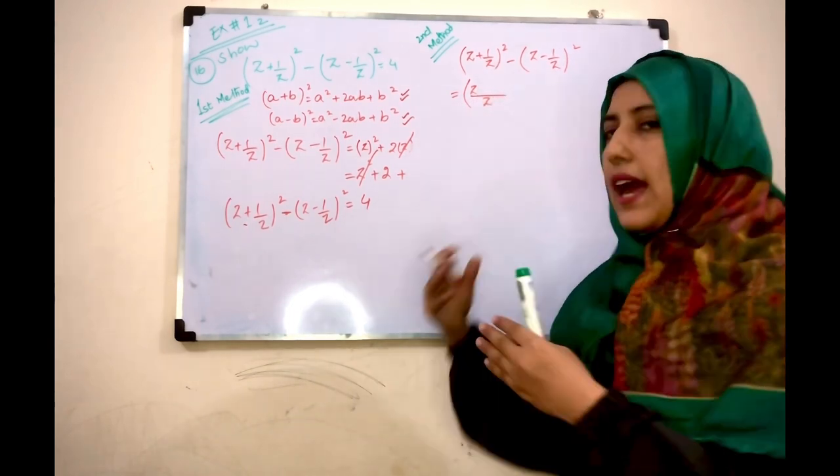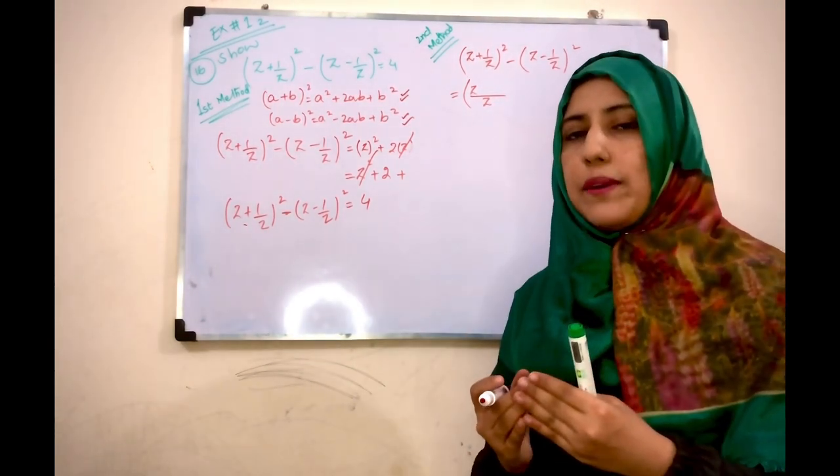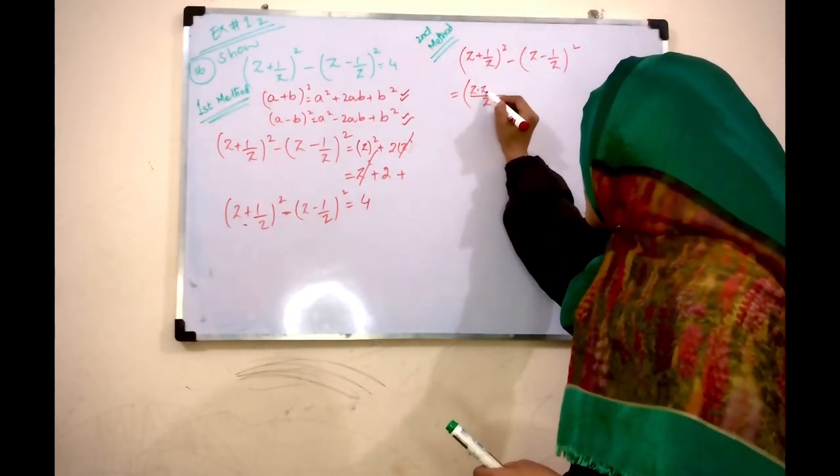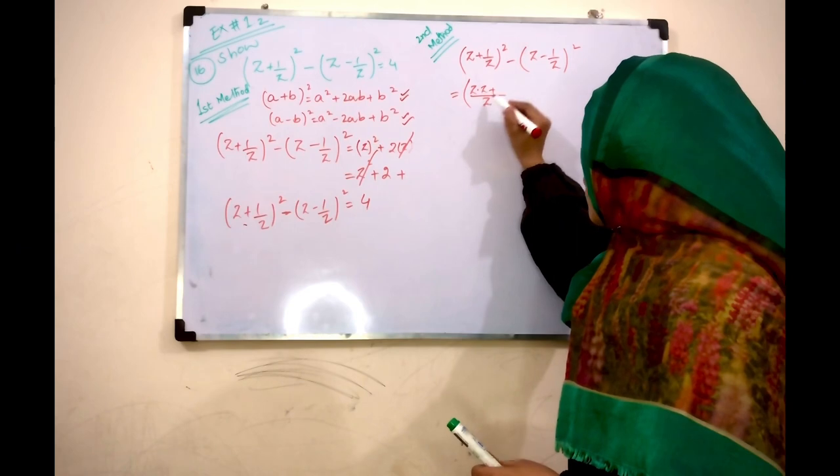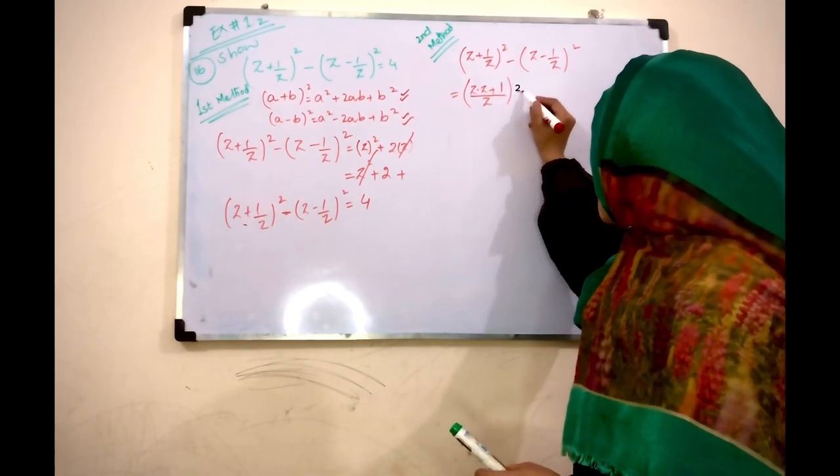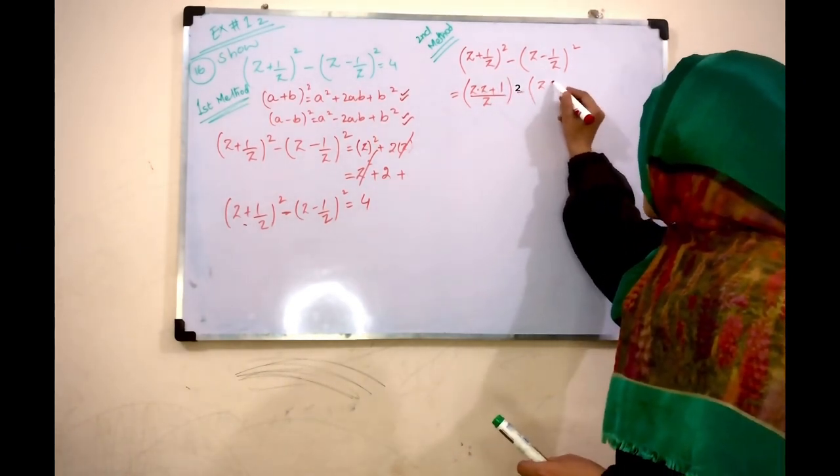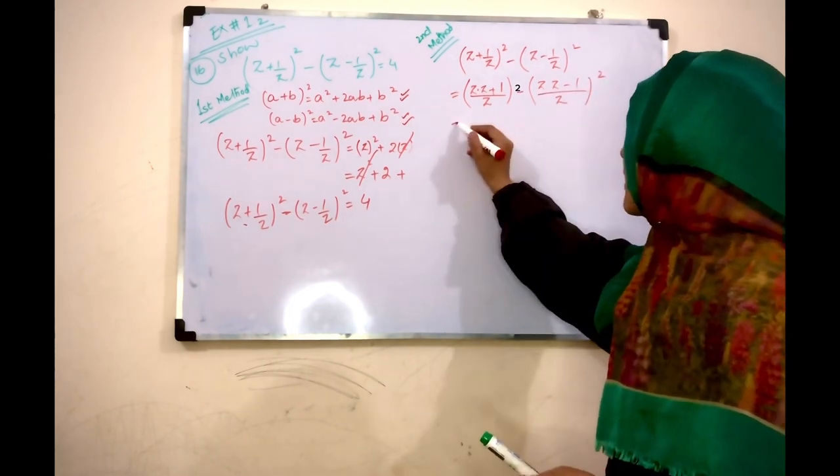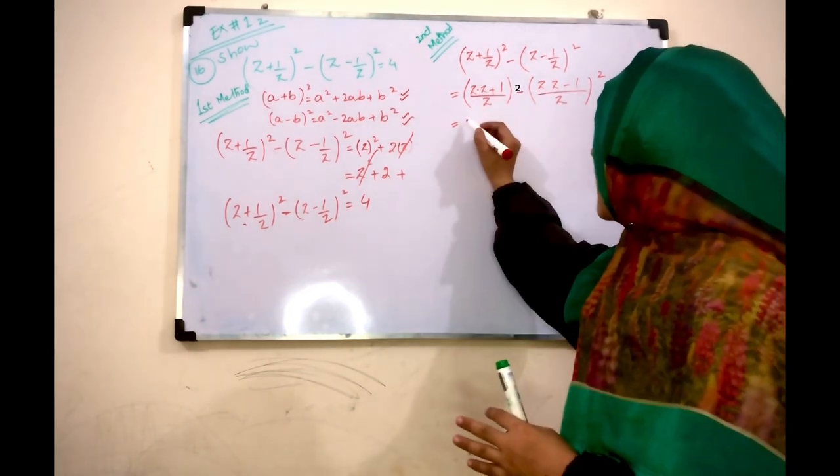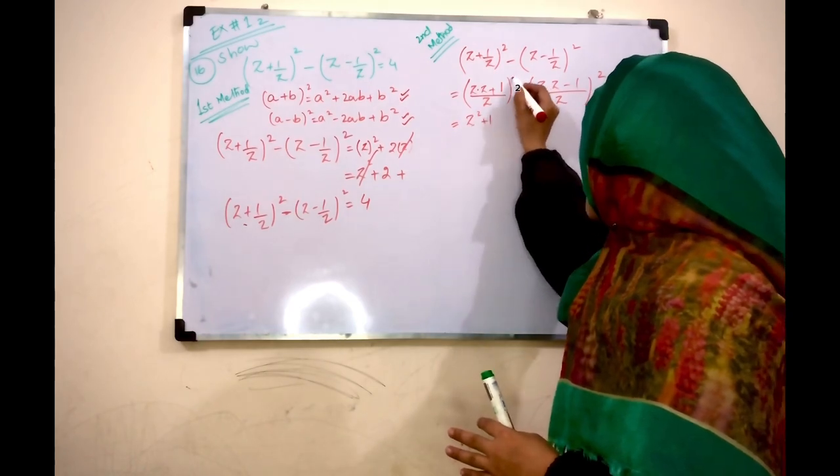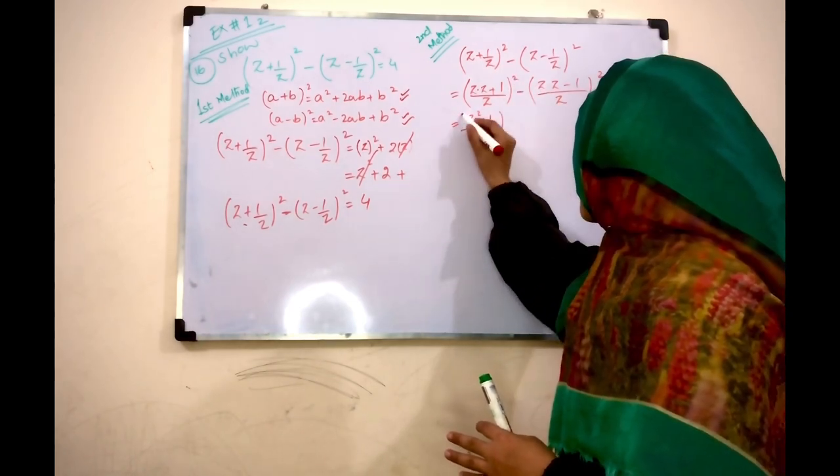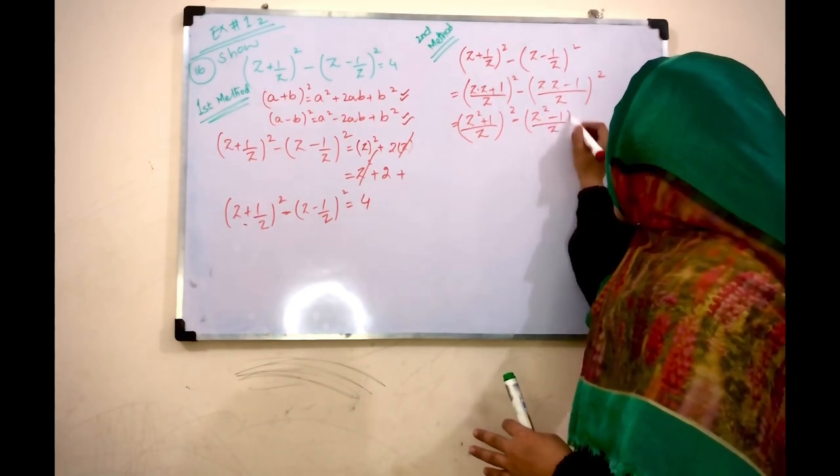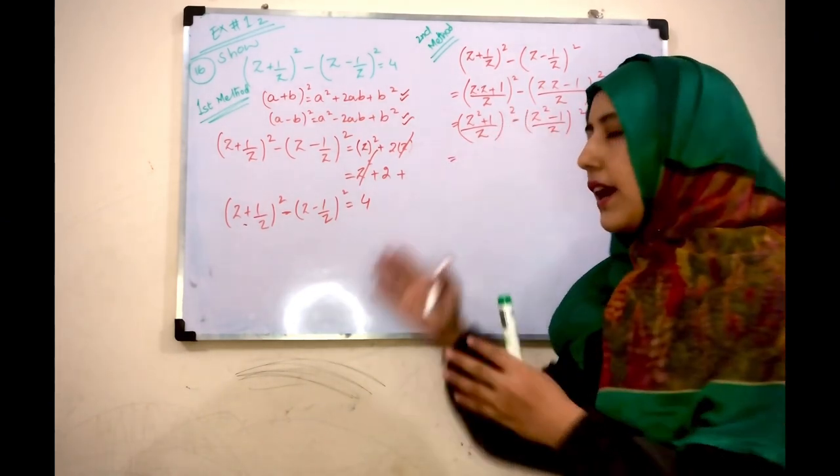Here you have fraction addition and fraction subtraction, so we apply fraction rules. Fraction in the denominator. Z denominator, so what happens here? Z multiplied by Z plus here Z already is, so here 1 is 1. Minus Z multiplied by Z minus 1 divided by Z.